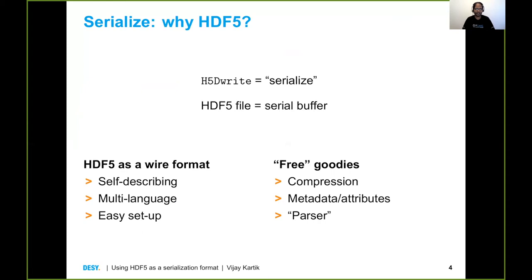So for serializing, why use HDF5? Why even consider it when there are so many serialization formats out there? What I found is that HDF5 lends itself quite readily to serialization. In fact, the write call is almost a direct mapping to a serialize call, and the HDF5 file itself is quite literally a serial buffer — just a byte stream. HDF5 also has very nice features: it's self-describing, so I don't need to come up with metadata to describe the data I'd be sending across the wire. And there are HDF5 APIs available in different languages, which is a big plus when integrating code written by different scientists.